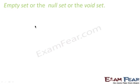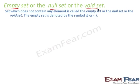Empty set, null set, or void set — please note all three mean the same thing. An empty set is a set which does not contain any element. This is the definition: there is no element in the empty set, and it is denoted by the symbol φ or empty curly braces {}.